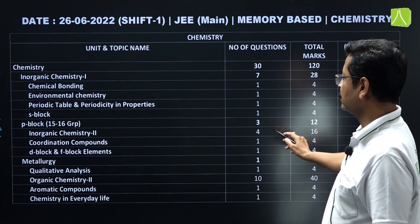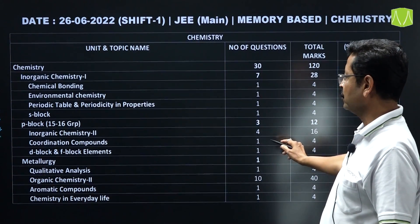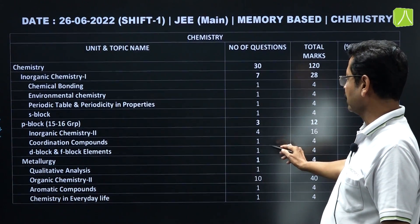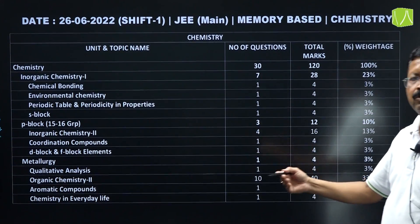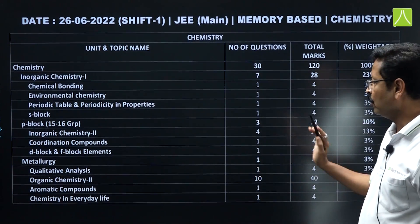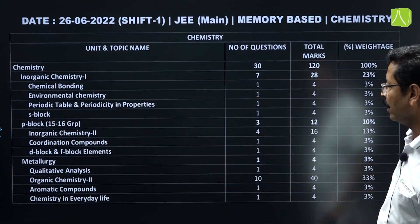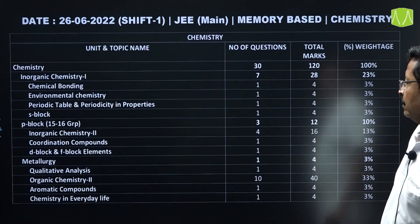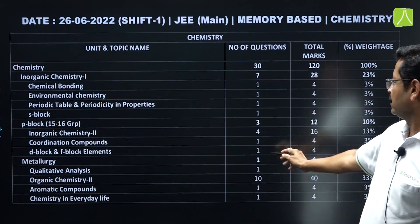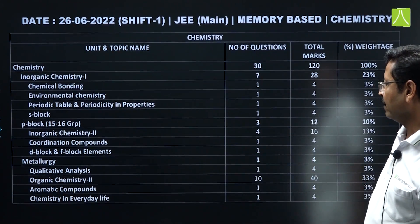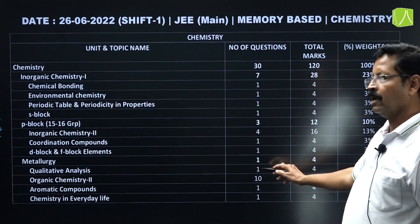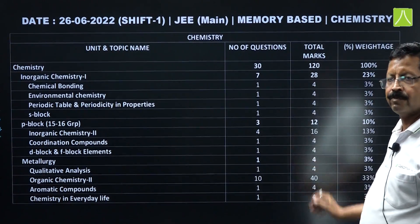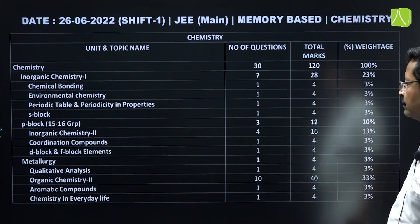From inorganic Class 12th: coordination compounds — 1 question, DNF also contributed 1-2 questions. From metallurgy, one Ellingham graph question came; and one qualitative analysis question on brown ring test also appeared.